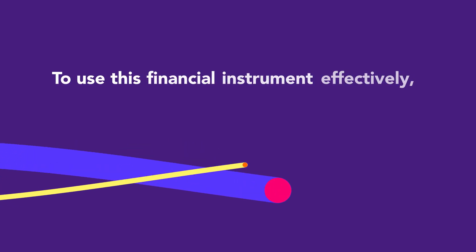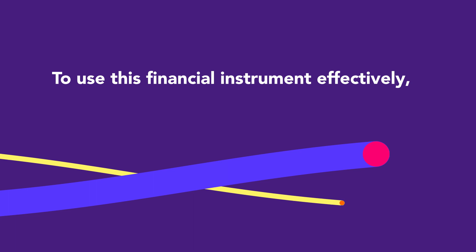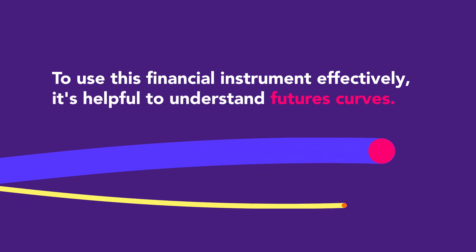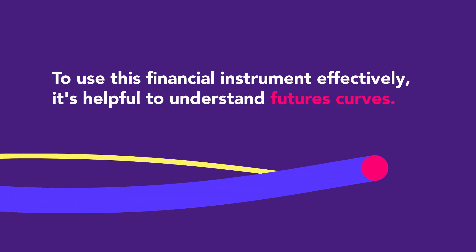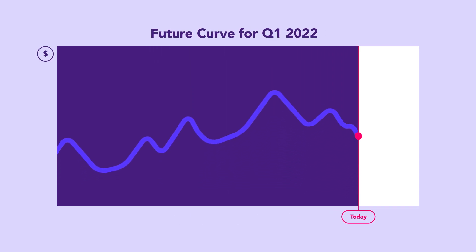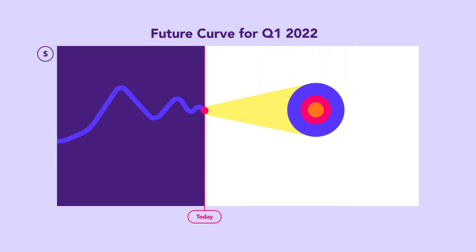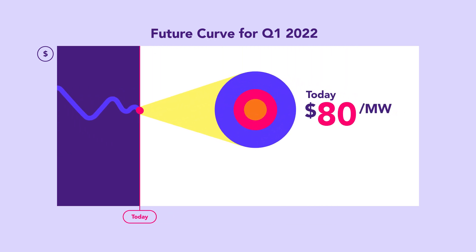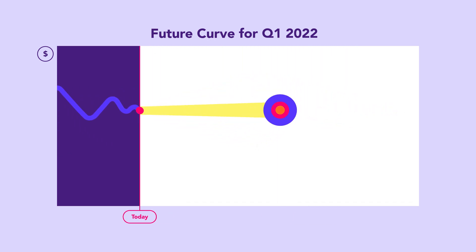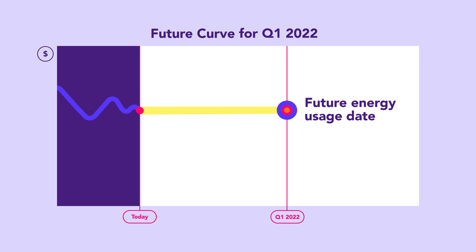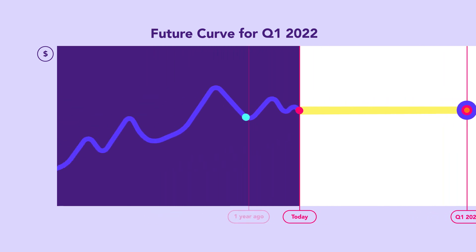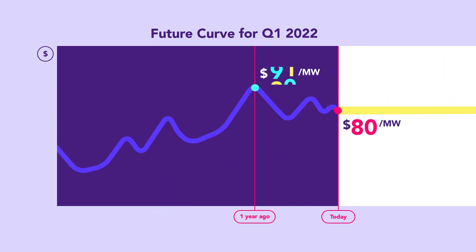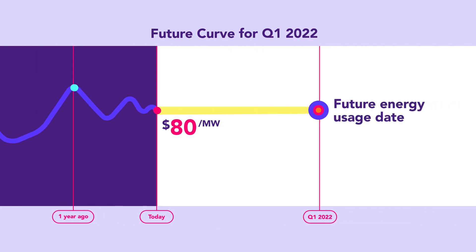To use this financial instrument effectively, it's helpful to understand futures curves. Put simply, they allow us to visualise what price we can agree today for energy that we will use at a future date, and compare it to what we could have purchased it for in the past. Once transacted, our price is now locked in, regardless of market movements in this time.